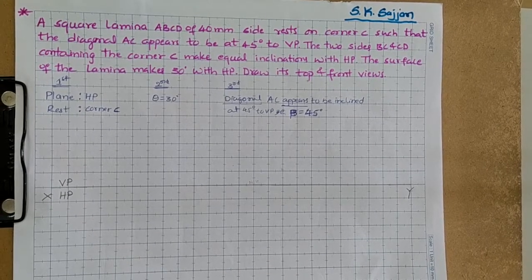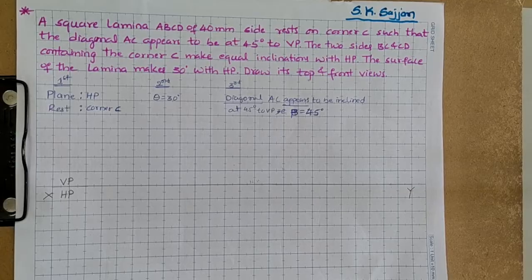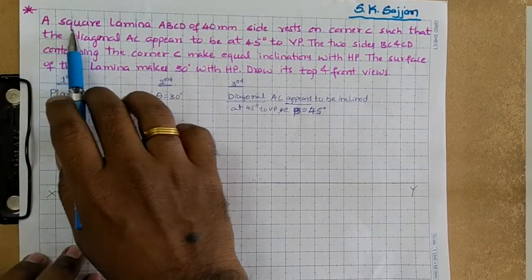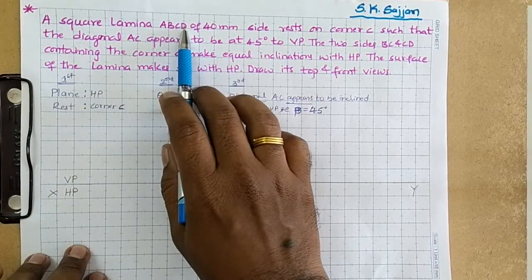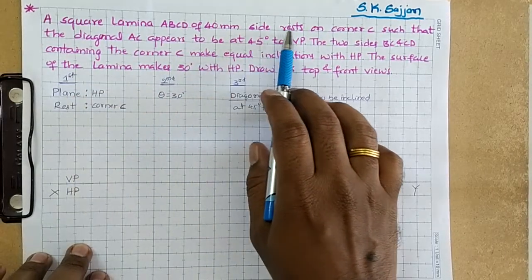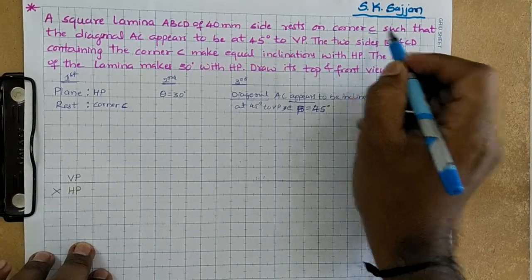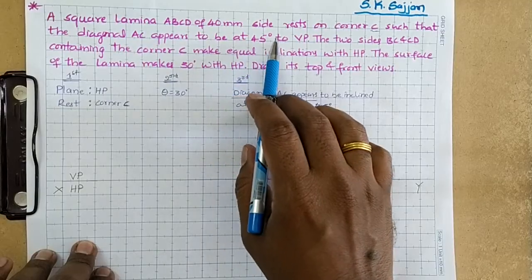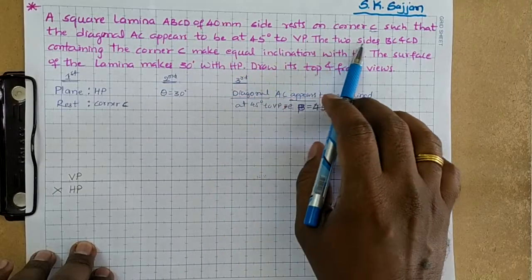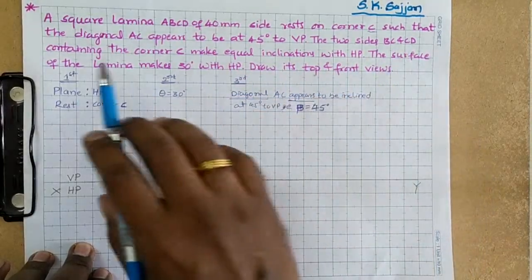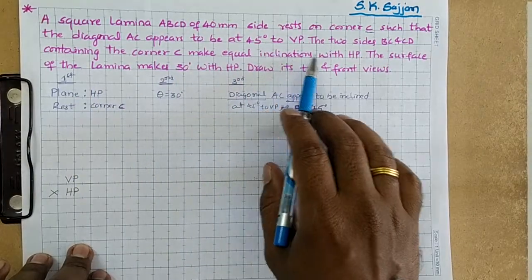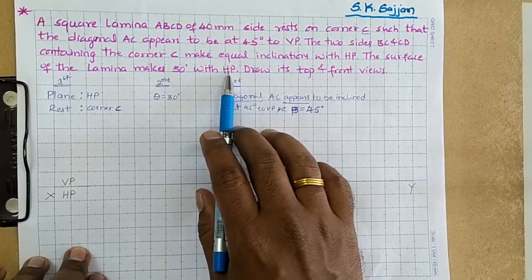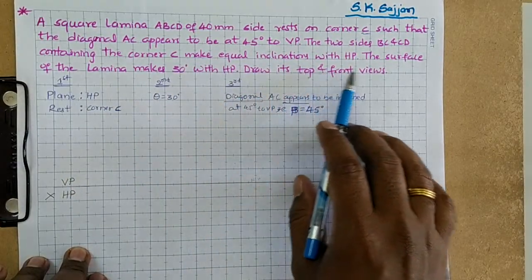Hi friends, in this video we are going to learn projections of plane surfaces. The problem is: a square lamina ABCD of 40mm side rests on corner C such that the diagonal AC appears to be at 45 degrees to VP. The two sides BC and CD containing the corner C make equal inclinations with HP. The surface of the lamina makes 30 degrees with HP. Draw its top and front views.